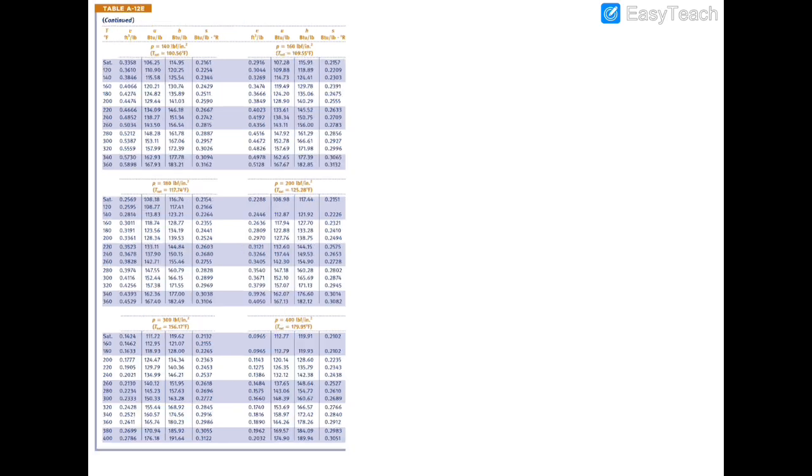I'll go to the superheated tables and look for 280 Fahrenheit. At 280 Fahrenheit, we have 164.13 BTU per pound for enthalpy. We're at 154.75, so we're going to keep going. We'll fix our temperature at 280 and get closer to our enthalpy of 154. At 300 PSI and 280, we have 157.63. At 400 PSI and 280, we have 154.72. So 154.72 and 157.63 are our closest two numbers to 154.75. If you really wanted to, you could approximate and say P2 equals 400 PSI.